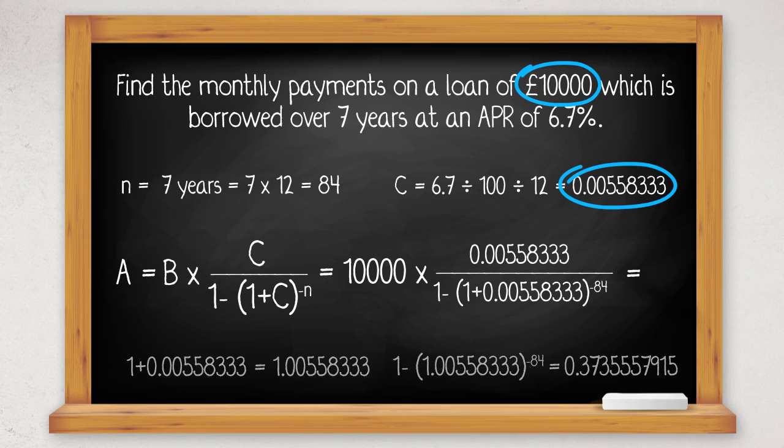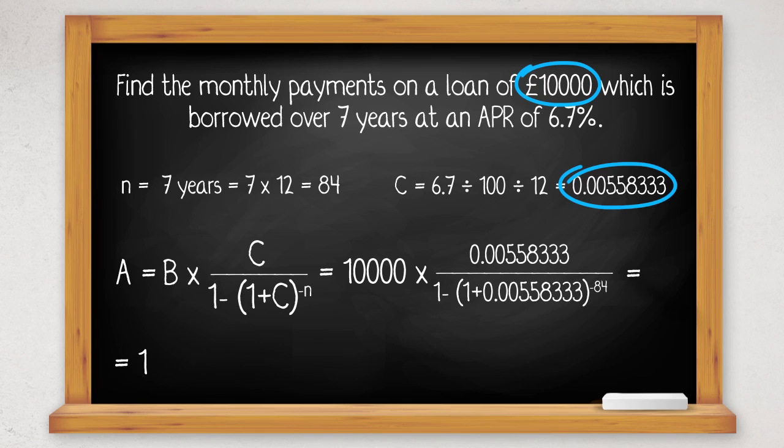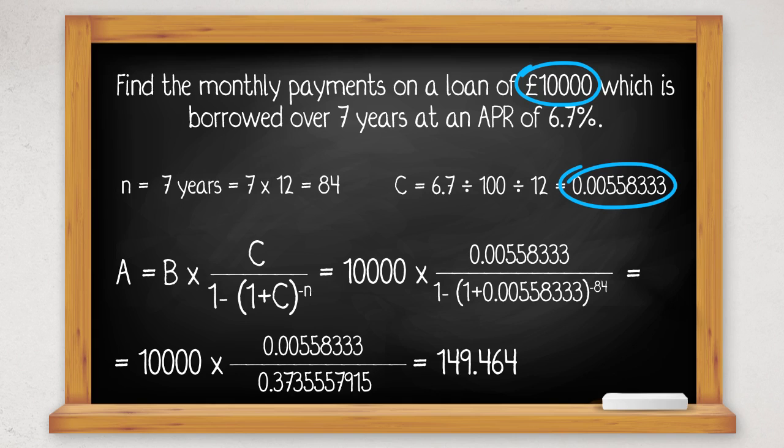So I now need to type into my calculator 10,000 times 0.00558333 divided by 0.3735557915. That gives us 149.46451. And since it's in money, we round it to two decimal places. So the monthly payments are £149.64.